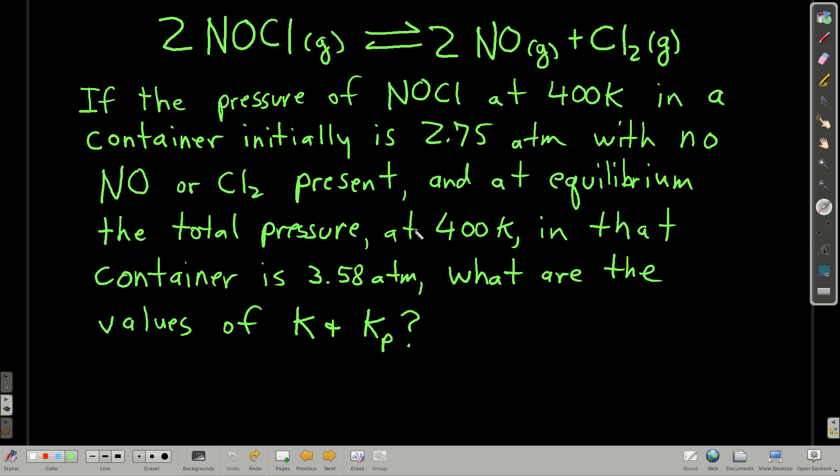What we're going to do first is we're going to get Kp and then use that relationship that we just saw to calculate K in terms of concentration. So how do we get Kp? Well, what is Kp? It's the pressure of nitrogen monoxide squared times the pressure of chlorine divided by the pressure of nitrosyl chloride squared. So we need to get the partial pressure of all these gases at equilibrium. And that's what we're going to do first.